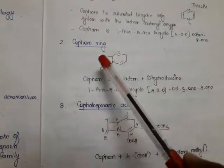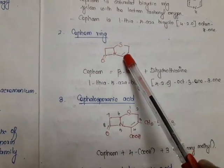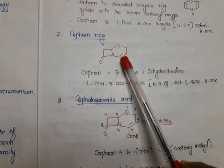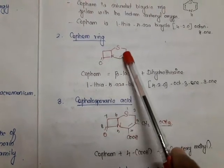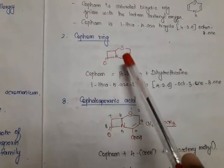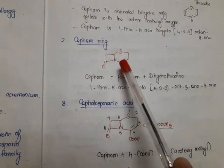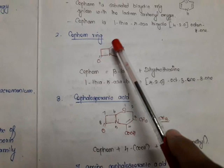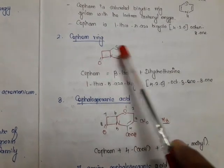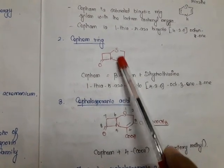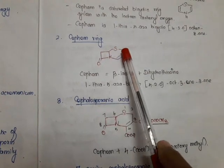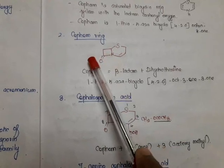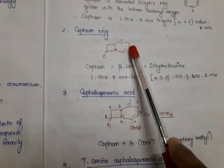Now we'll see the cephem ring. It is having one double bond between positions three and four. So what is cephem? It is a fusion of a beta-lactam ring with a dihydrothiazin ring, because only one double bond is left from thiazin — that's why it is called dihydrothiazin ring. Its chemical name is: 1-thia-5-azabicyclo[4.2.0]oct-2-en-8-one, because a double bond is present between positions three and four.